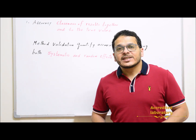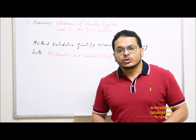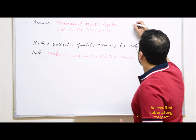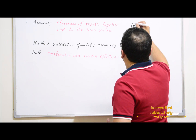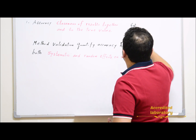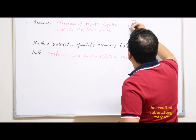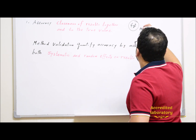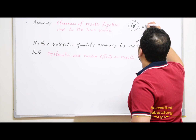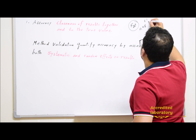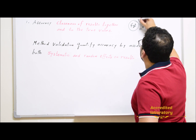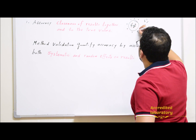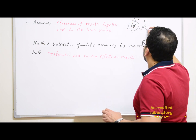Accuracy is the closeness of results together and to the true value. That means if you spike your sample with 5 ppb as an example, your results should be close to this value — maybe 4.98 or 5.1 — so all of your results should be close to this value to be accurate.